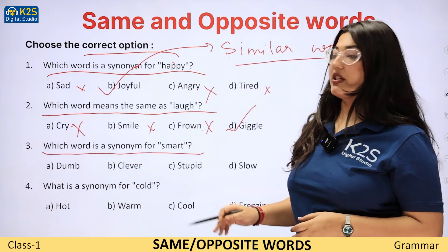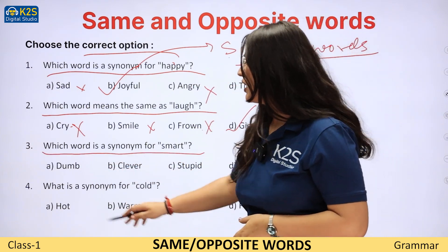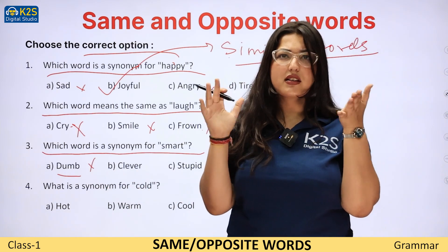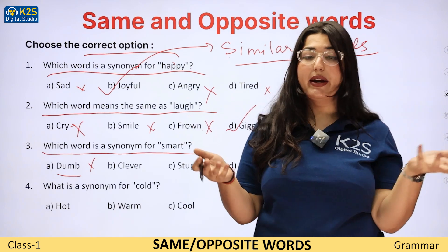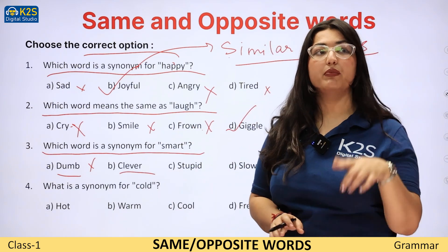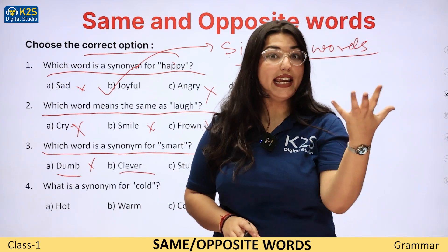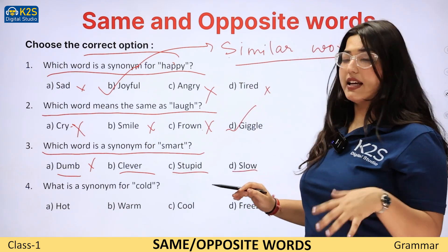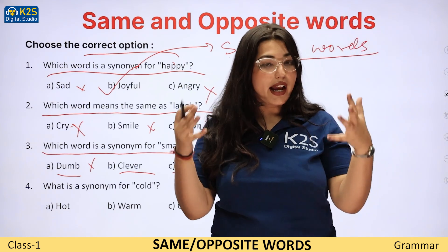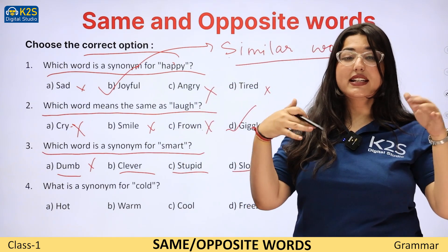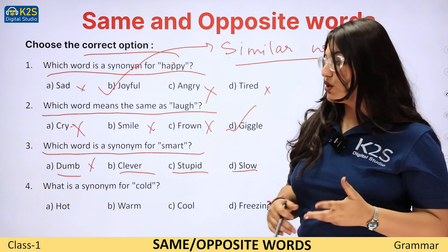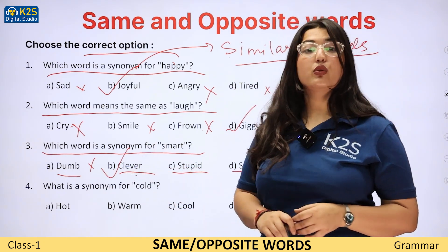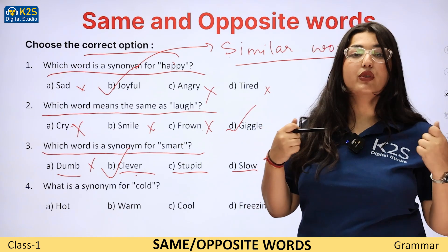Which word is a synonym for smart? Dumb — dumb means buddhu, jo bahut zyada smart nahi hai, mentally active nahi hai. Clever — clever matlab jo mentally active hai. Stupid — iska matlab bhi not so very clever. Slow ka matlab bhi jaldi answer nahi karna. So jo clever hoga, that's the right answer — kyunki smart aur clever dono ka matlab hai quickly active hona.